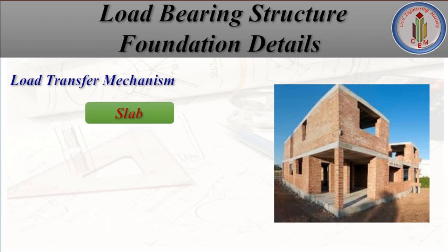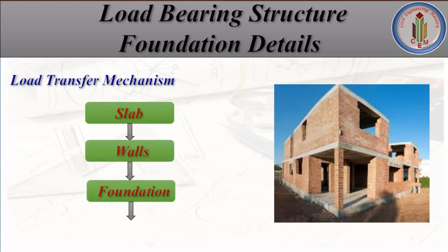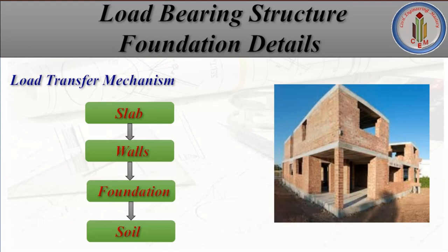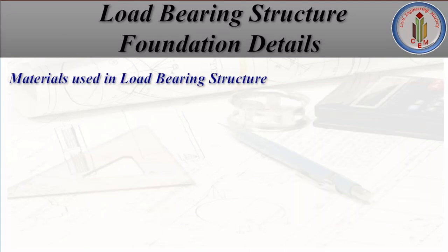In load bearing structure, the load transfers from slab to walls, walls to foundation, and foundation to soil. In frame structure, slab load transfers to beams, beams to columns, columns to footing, and then to soil. Now let's see the materials used in load bearing structure: size stone masonry, random rubble masonry, bricks, and solid blocks.